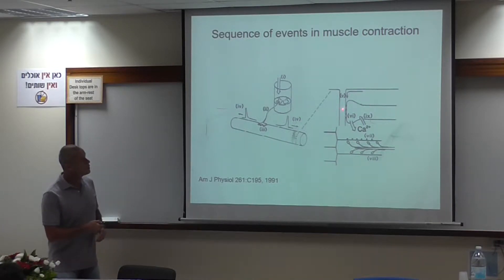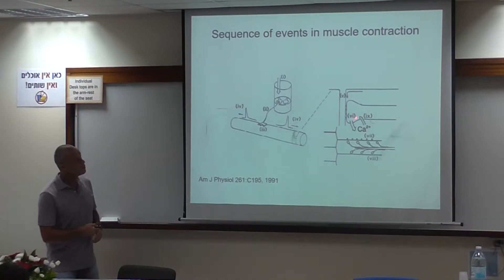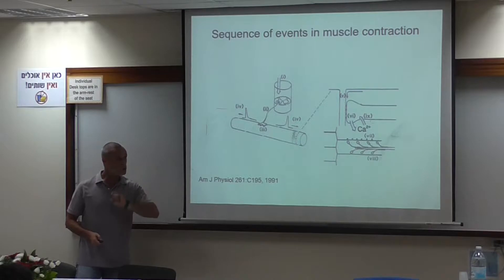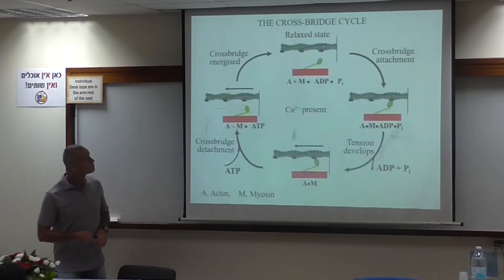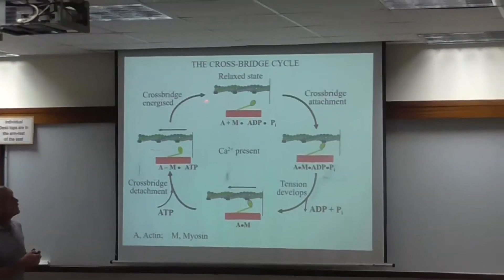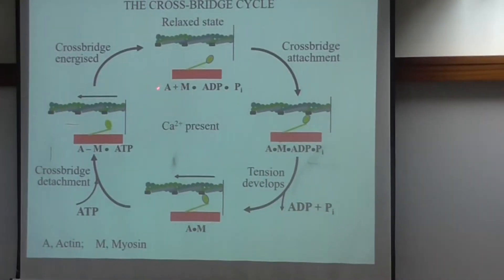This causes opening of the ryanodine receptor on the SR, the sarcoplasmic reticulum, which allows for a release of calcium into the myoplasm. The calcium then interacts with the sarcomere, which is the smallest contractile unit in the muscle. We have two contractile proteins in the sarcomere: we have actin, and we have myosin.